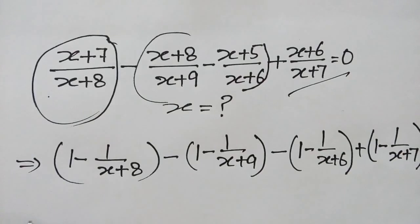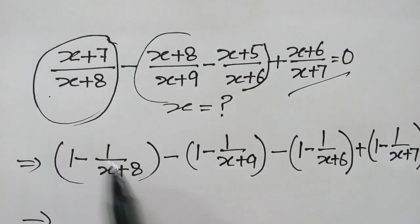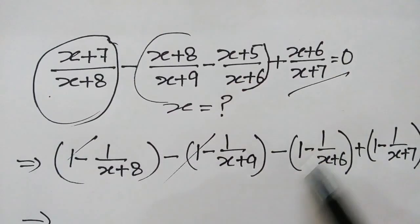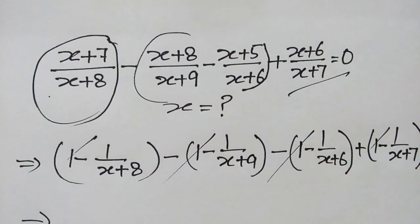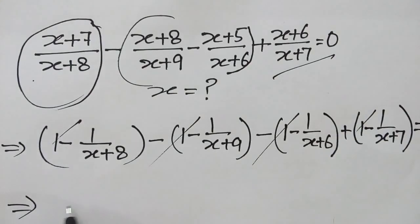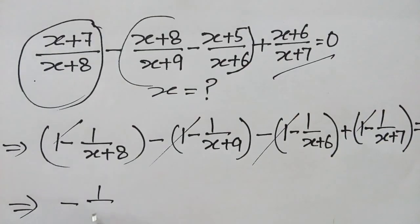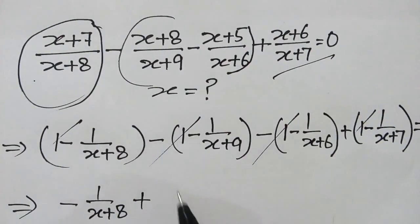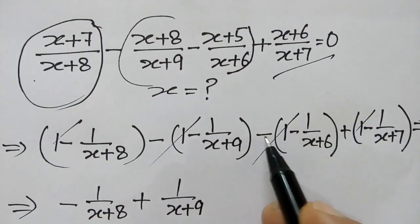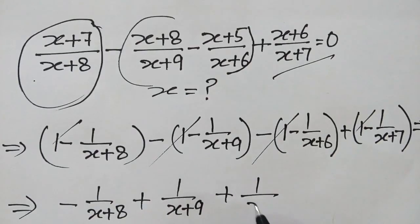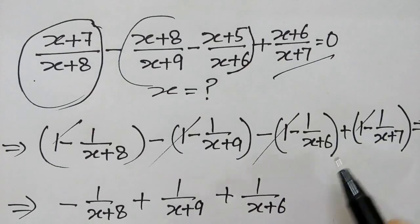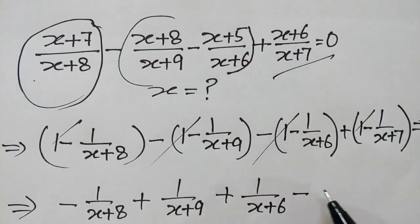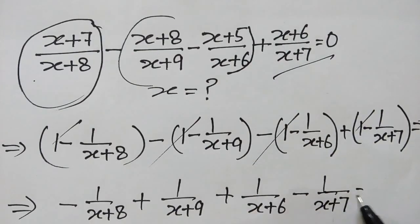Now, plus 1 and minus 1 cancel out. Minus 1 and plus 1 cancel out. So we have minus 1 over (x+8), plus 1 over (x+9), plus 1 over (x+6), minus 1 over (x+7), is equal to 0.